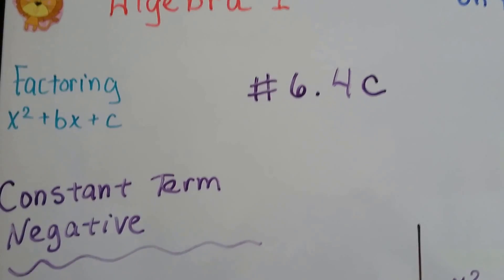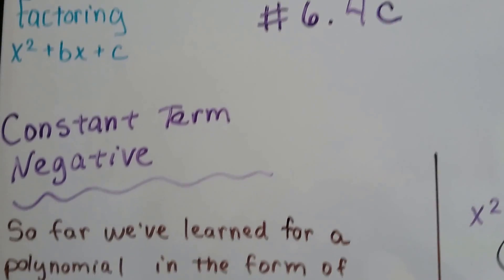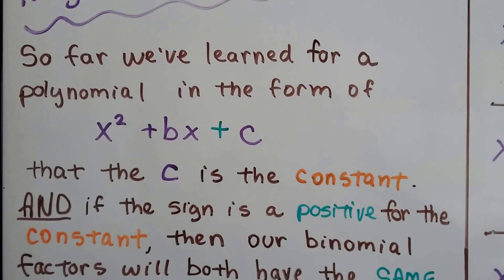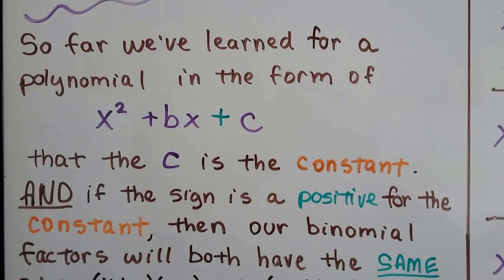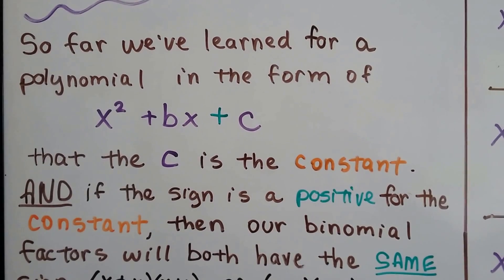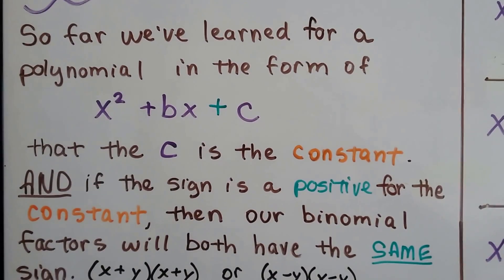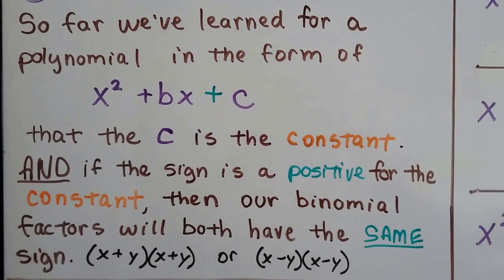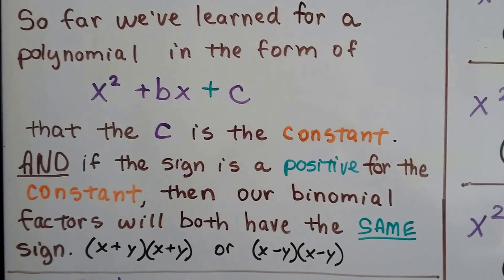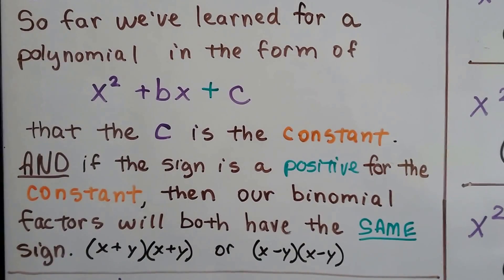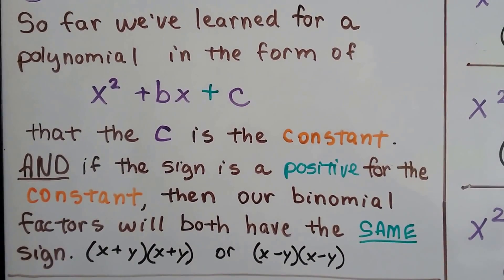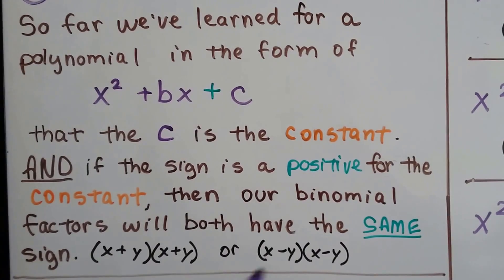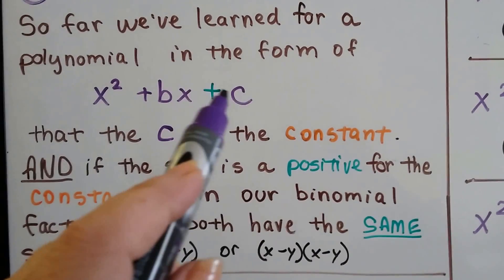Algebra 1, 6.4c, constant term negative. So far we've learned for a polynomial in the form of x squared plus bx plus c, that c is the constant. And if the sign is positive for the constant, then our binomial factors will have the same sign — so x plus y, x plus y, or x minus y, x minus y — the binomial factors are going to have the same sign.